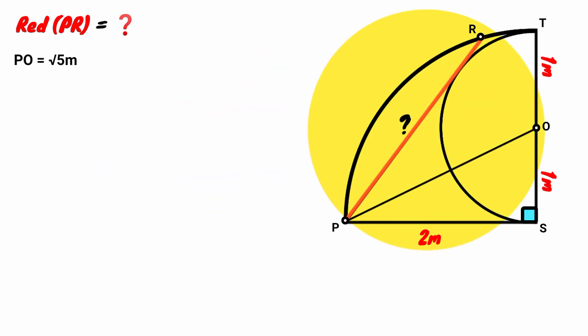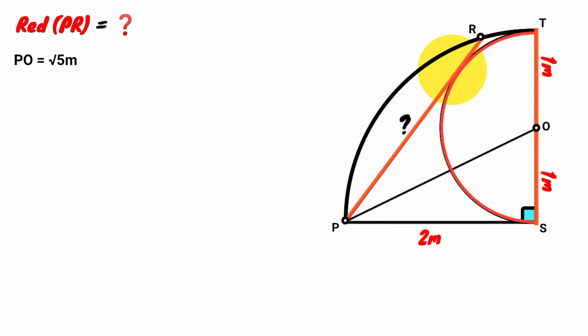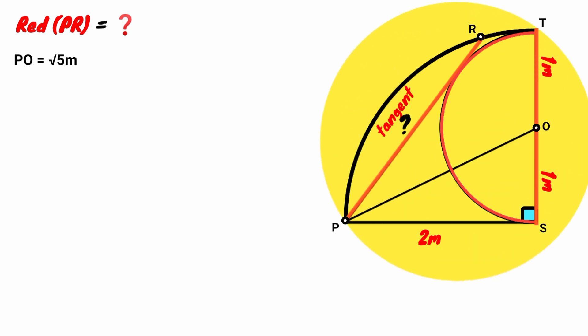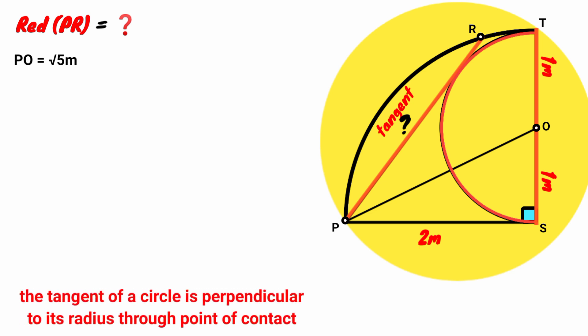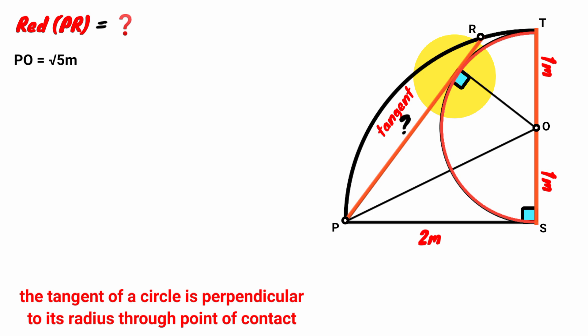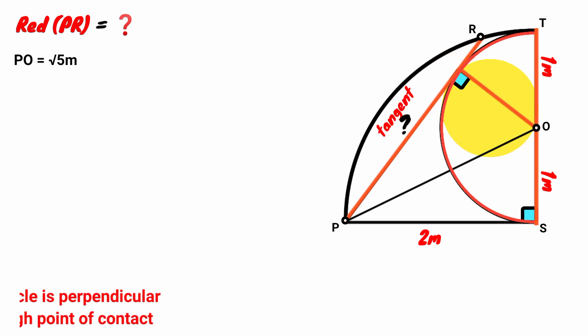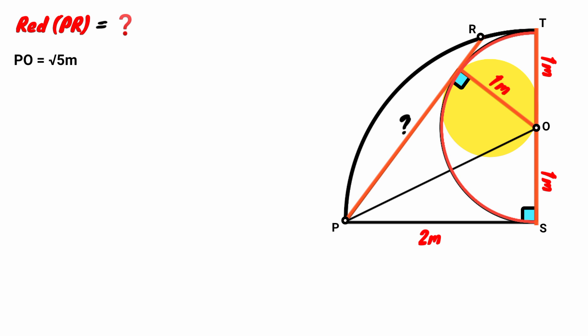Now we see that line PO touches this semicircle at a point — that is, it is a tangent to the semicircle. From circle theory, there is a rule that the tangent to a circle is perpendicular to its radius at the point of contact. So from this point of contact, if we draw a radius of the semicircle, the angle formed will be a right angle. This radius has a length of one meter.